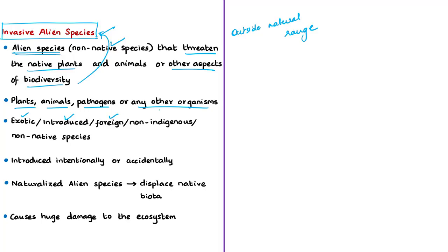These alien species are introduced by humans either intentionally or accidentally through a human agency, or a species that has been accidentally introduced from one region to another. An alien plant that has escaped from its original ecosystem and is reproducing on its own in the regional ecosystem is considered a naturalized alien species. These naturalized aliens successfully spread in the ecosystem and displace the native biota — that is, the plant life that existed in that particular region.